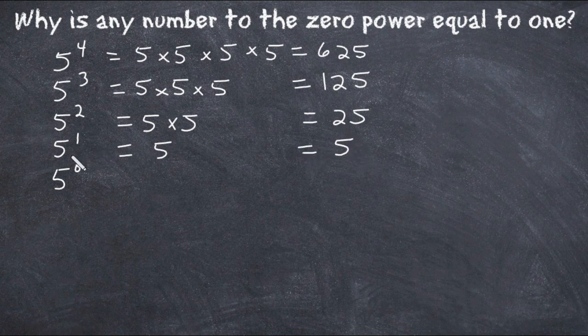And of course we're going from five to the first power now to five to the zero power. So that means five is going to get five times smaller, and five divided by five equals one.